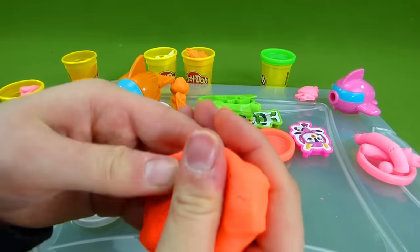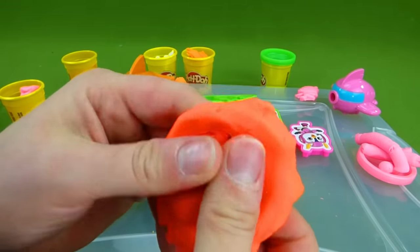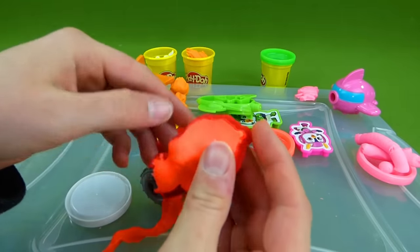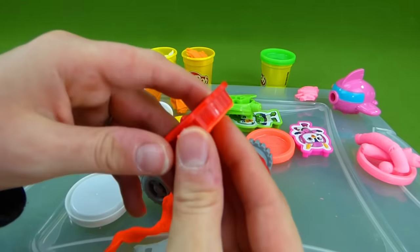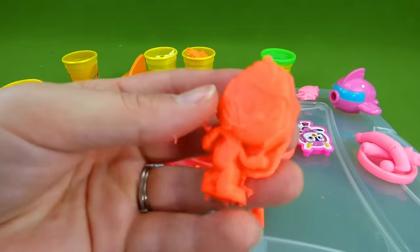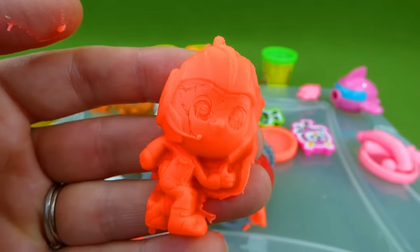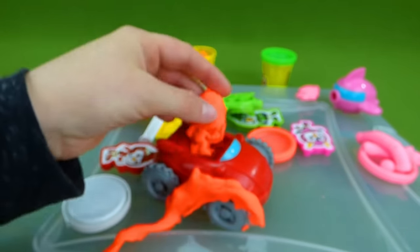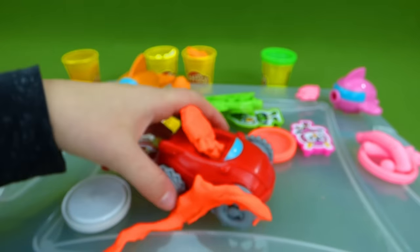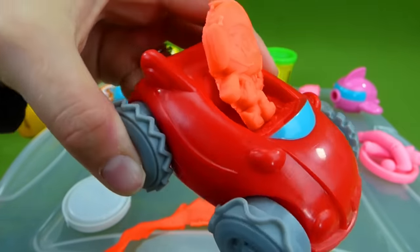And then we can make a Rod. There we go. Squish it all in there. Take away the extra. So we've done Rod, Penny, and Swift. Now we need to do Brody.